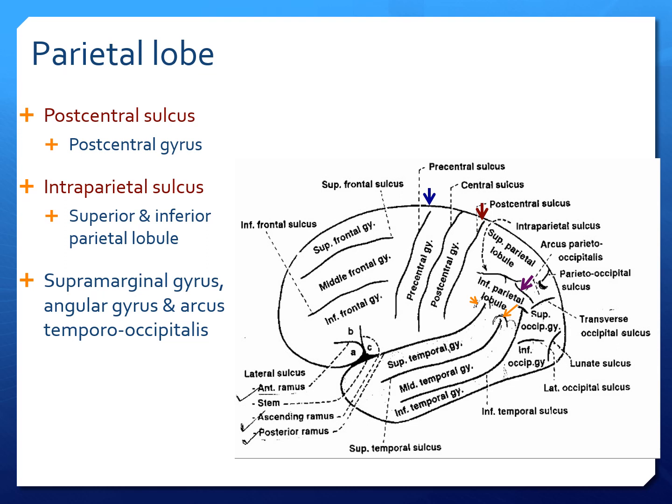Coming to the parietal lobe, we can see a post-central sulcus marked with the red colored arrow. The gyrus between it and the central sulcus is called the post-central gyrus. There is an anteroposterior sulcus called the intraparietal sulcus. The area above it is the superior parietal lobule and the area below it is the inferior parietal lobule. Two orange colored arrows point at the supramarginal gyrus and the angular gyrus. So the important gyri on the parietal lobe are: post-central gyrus, superior and inferior parietal lobule, supramarginal gyrus, and the angular gyrus.